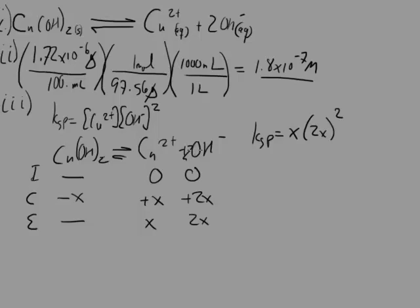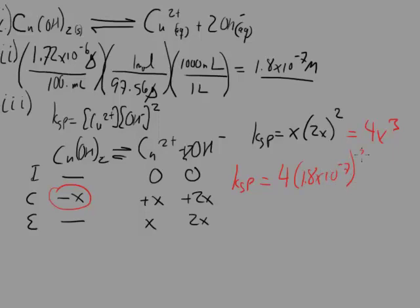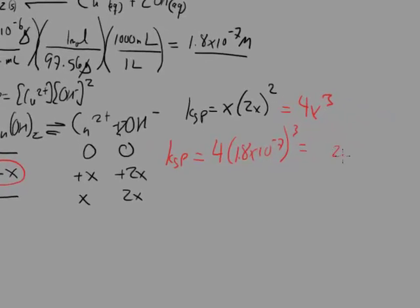The coefficient on hydroxide is 2. x represents the solubility in moles per liter of copper 2 hydroxide — how much dissolves — so the x value from part II, we can substitute that in here. If you take x times 4x squared — which is what (2x)² gives — you'll get 4x cubed. Plugging in the value from part II, Ksp equals 4 times (1.8 × 10⁻⁷)³, and that ends up being 2.2 times 10 to the negative 20. That's our Ksp value.